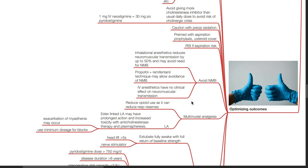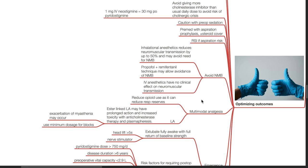Avoid neuromuscular blockade whenever possible. Inhalational anesthetics reduce neuromuscular transmission by up to 50% and may avoid the need for neuromuscular blockade. Propofol and remifentanil technique may allow avoidance of neuromuscular blockade. IV anesthetics have no clinical effect on neuromuscular transmission.